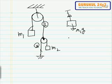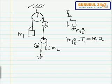So we can write its equation as m1g minus T1 equals m1a1. I'm assuming that the mass m1 is coming downwards.